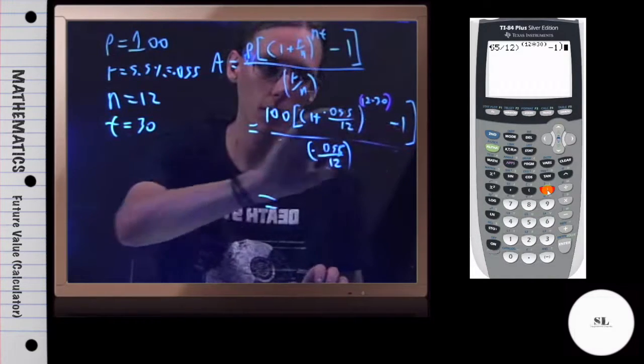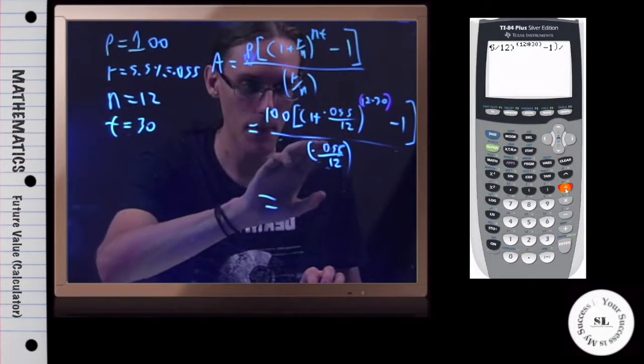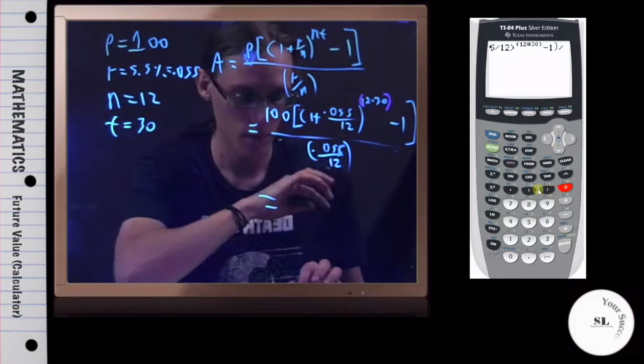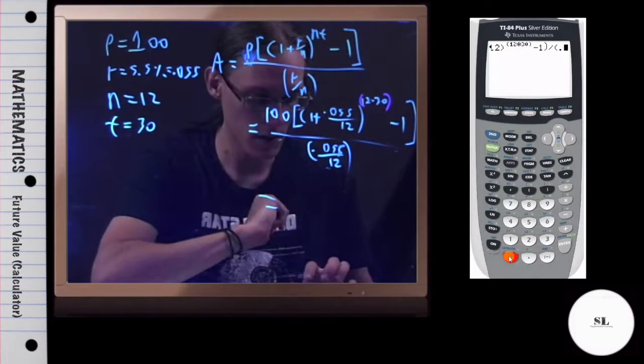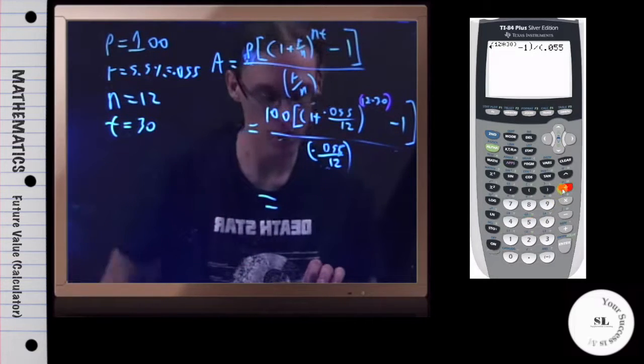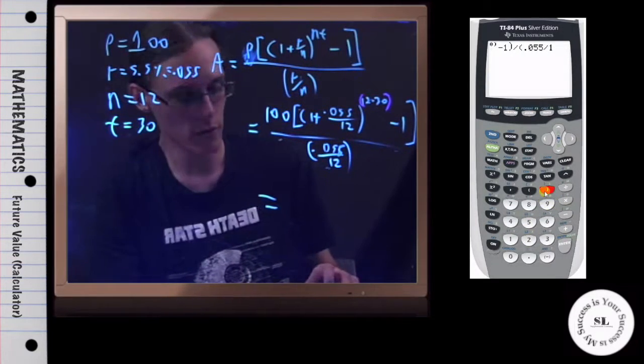And I'm going to divide all of this by—make sure to use parentheses here—0.055 divided by 12, close the parentheses. So after all that, hit Enter.